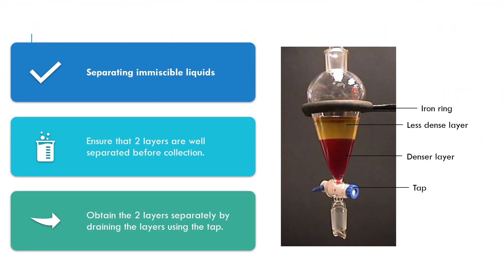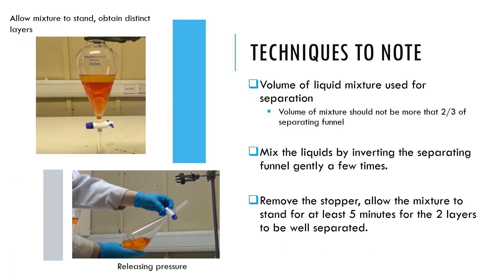A separating funnel is used to separate two liquids of different densities. It is used when extracting a dissolved substance from one liquid into another immiscible liquid. Ensure that the two liquid layers are well separated before draining the liquids out from the separating funnel. The volume of liquid mixture should be less than two-thirds the volume of the separating funnel.